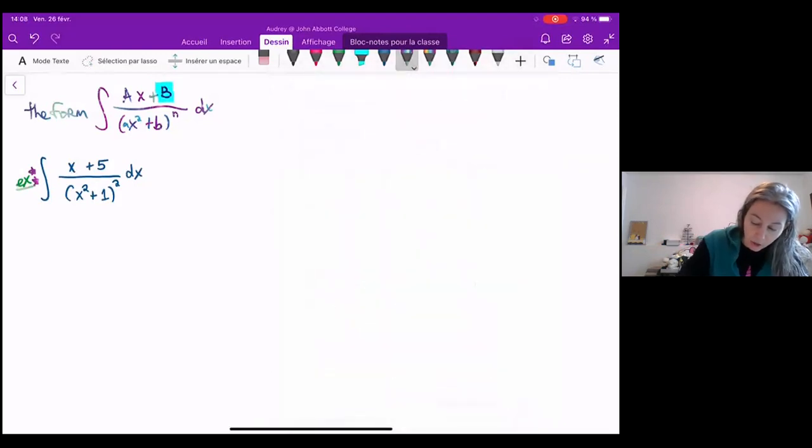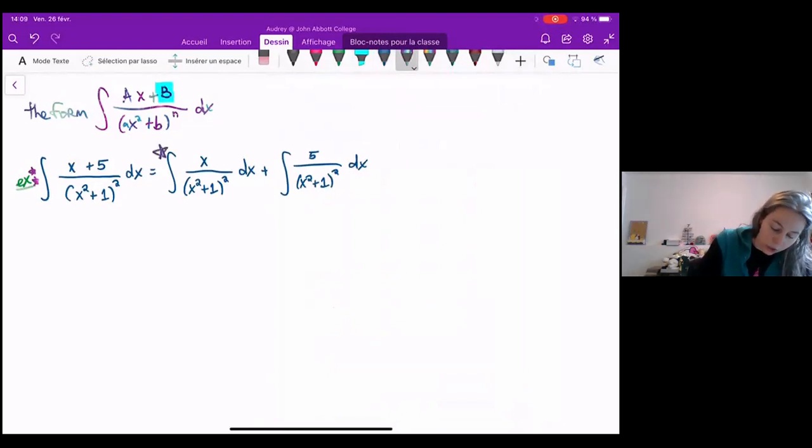With one minor exception, I can actually separate the x and the 5. So we'll say x over x squared plus 1 squared dx plus 5 over x squared plus 1 squared dx. And now this right here, we'll call it a star. We already did a similar thing in the last video.